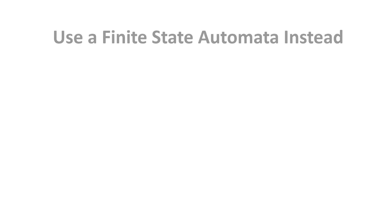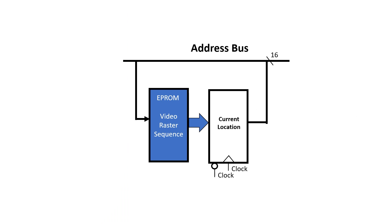But I'm going to try a different approach in this video. Instead, I'm going to use a finite state automata. You'll remember that the raster generator itself was just a big finite state automata. But instead of a ROM, I'm going to use an adder this time.